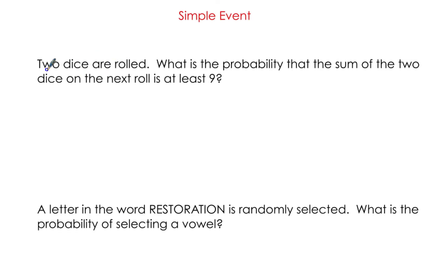I've got a couple more examples for you. Two dice are rolled. What is the probability that the sum of the two dice on the next roll is at least 9? How many possible outcomes are there? If you're pairing dice together, you have snake eyes, 2 and 1, 3 and 1, 4 and 1, and so on. There are actually 36 total possible outcomes.